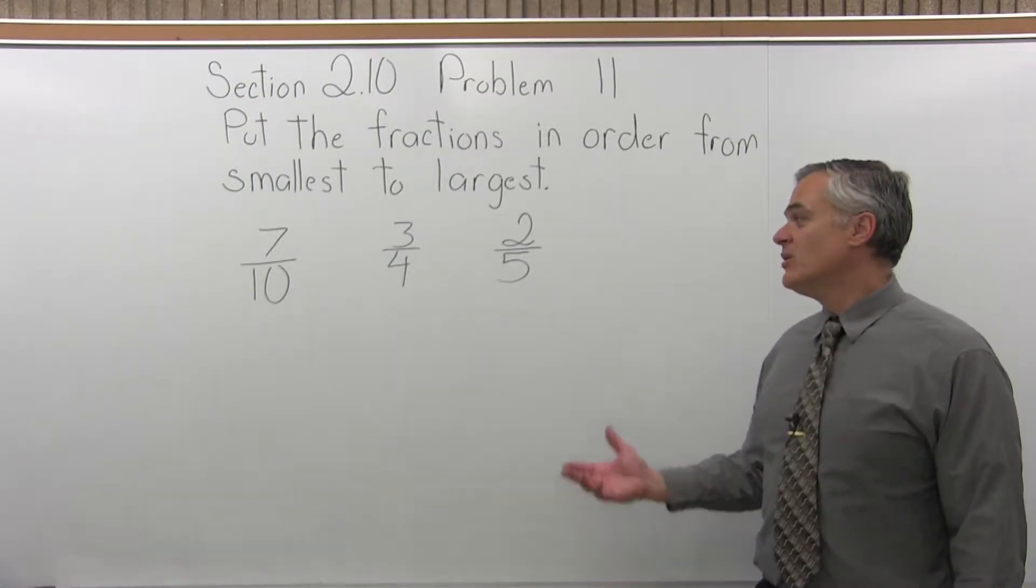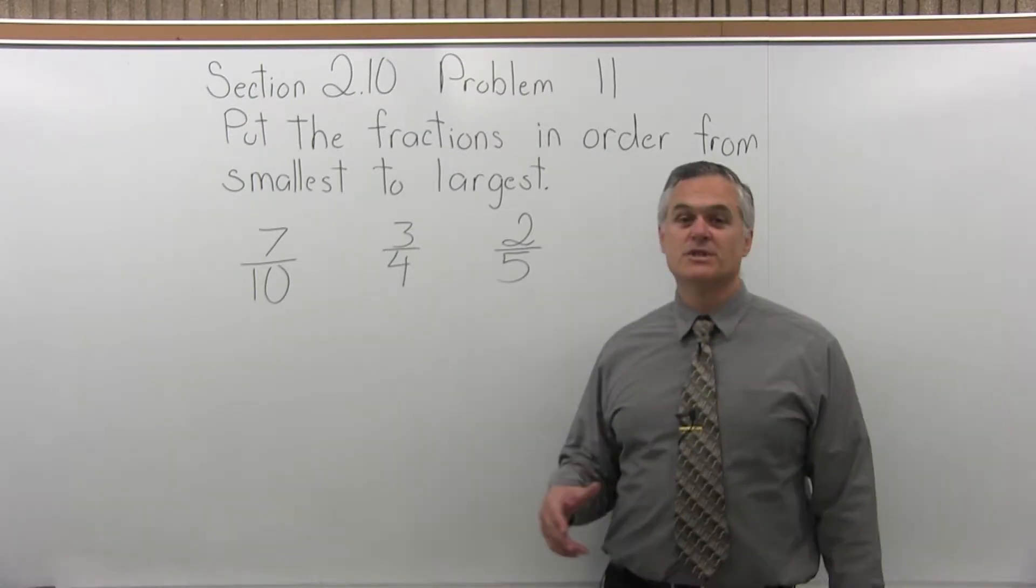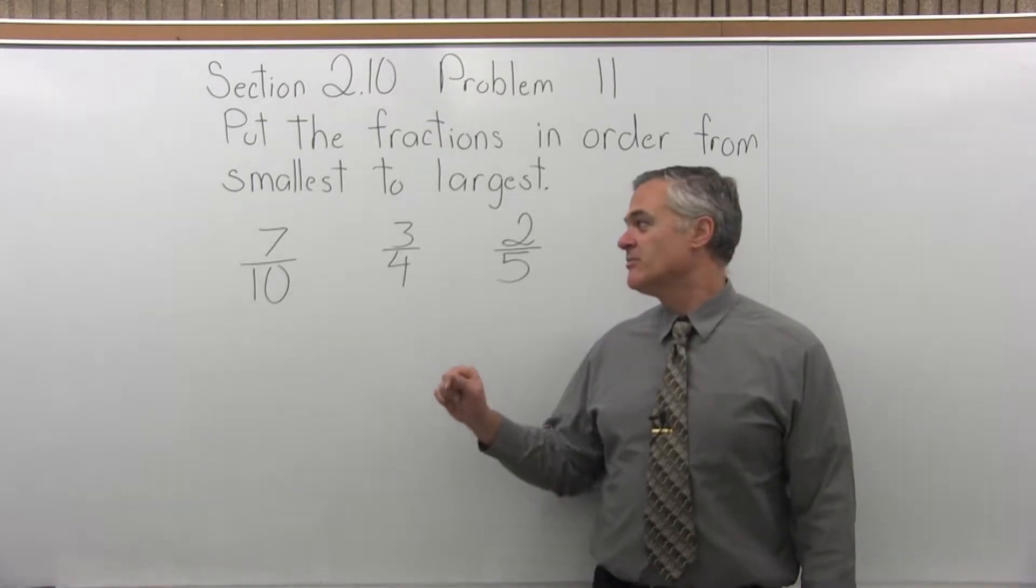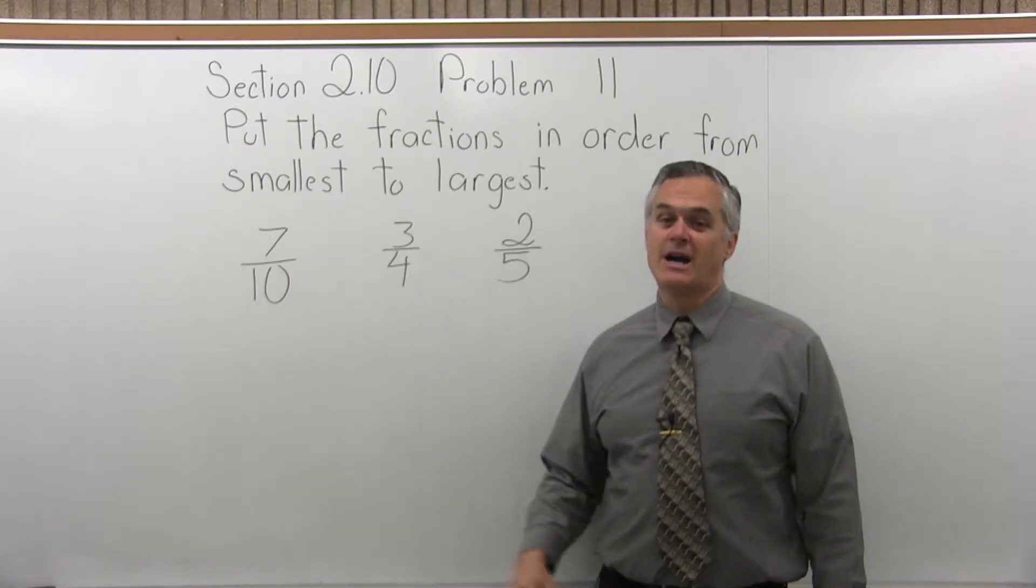Now in order to put them in order, we really want to see them over the same denominator. It's very difficult to tell without having the same denominator. So the denominators are 10, 4, and 5.